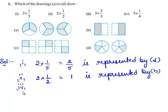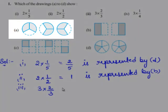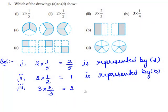Now let us move on to the third bit. We need to identify which of the drawings represents the fraction 3 times of 2 by 3. When we closely observe drawing A, we find three circles. Each circle is divided into three parts, and two parts are shaded in each of the three circles. Therefore each circle represents the fraction 2 by 3. Since there are three circles, this represents 3 times of 2 by 3, which equals 2. So this fraction is represented by drawing A.